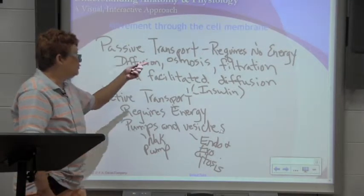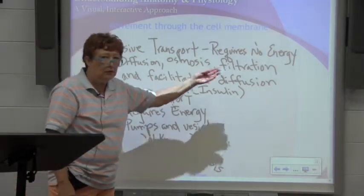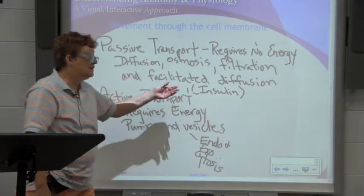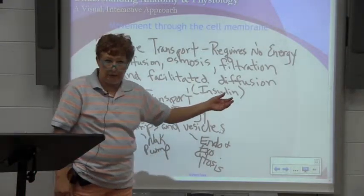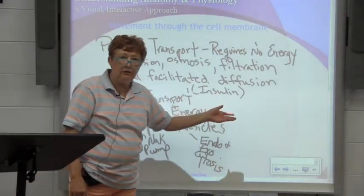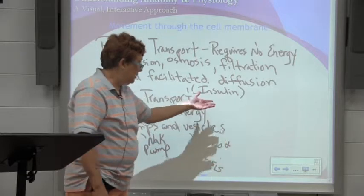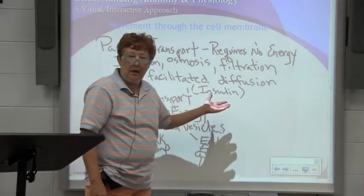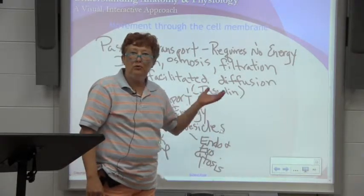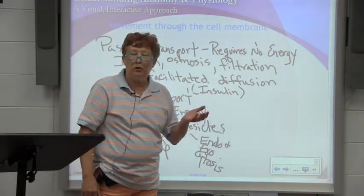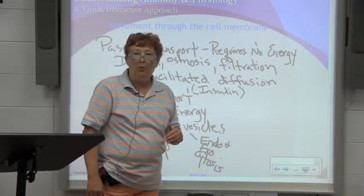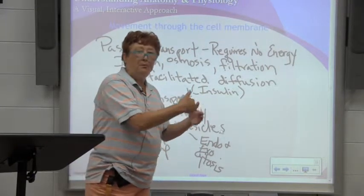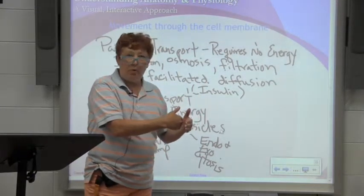Examples of passive transport include diffusion, osmosis, filtration, and facilitated diffusion. Facilitated diffusion — the best example of that occurs with insulin. To be able to use sugar inside the cell, we have to have another chemical transport it through the wall.